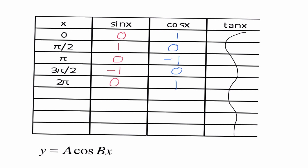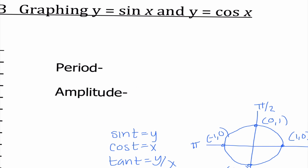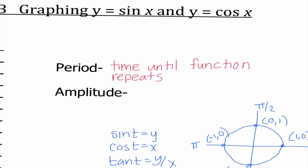For cosine, we're taking all of those x values and it would just continue again and again. Two terms that we're going to use today: the period is the time it takes until the function repeats, and our amplitude is the maximum height of the function.